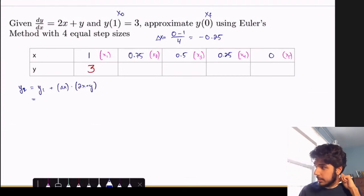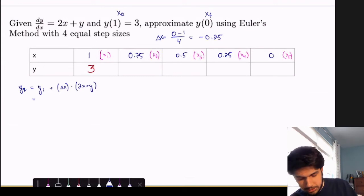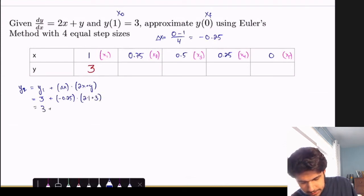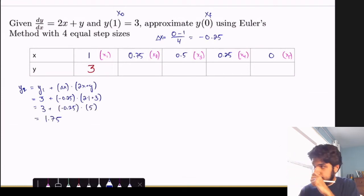So y sub 2 is going to be equal to, well, what's y sub 1? That's going to be the previous y value, which is 3 plus delta x in this case is negative 0.25. And then 2x plus y, we use these values from before. So this is 2 times 1 plus 3. So this would be 3 plus negative 0.25 times 5, that's equal to 1.75. So we can fill that value in right here.